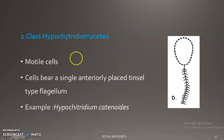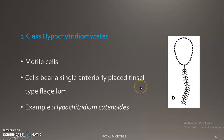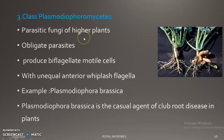The second class, Hypochytridiomycetes, also has motile cells with a single flagellum, but it is anteriorly placed. This anteriorly placed flagellum is a tinsel-type flagellum — a feather-like flagellum placed anteriorly. An example is Hypochytridium catenoides.